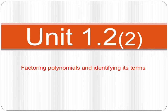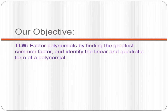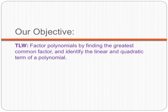The topic we're going to be discussing today is unit 1.2 day 2, which is factoring polynomials and identifying its terms. Our objective today is to factor polynomials by finding the greatest common factor, and then identifying the linear and quadratic terms of a polynomial. As we go through this, we're going to redefine common factors and identify our linear and quadratic terms.